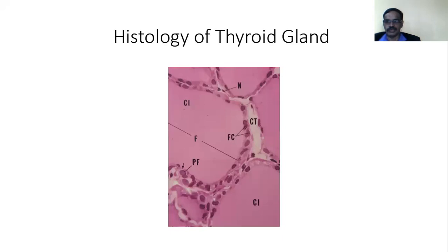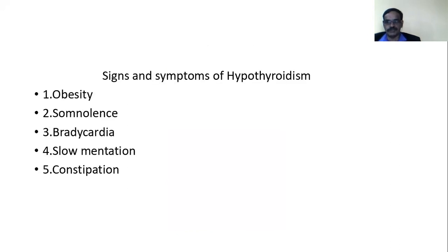This is also the thyroid gland. You can see thyroid follicles lined by follicular cells. In between there are some other cells — calcitonin-secreting cells. In the center there is colloid. Now let us see the signs and symptoms of hypothyroidism.